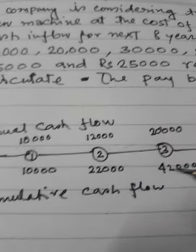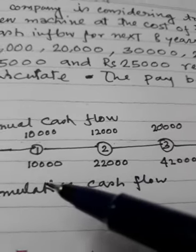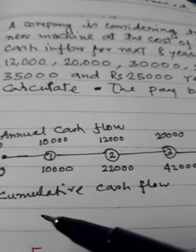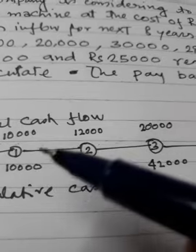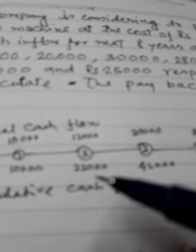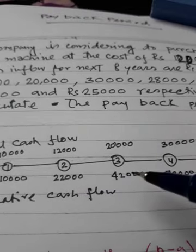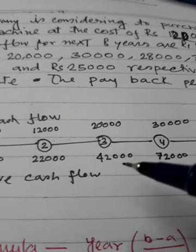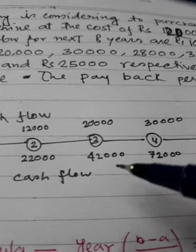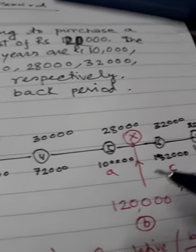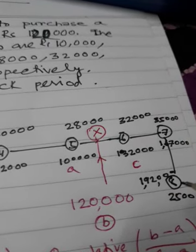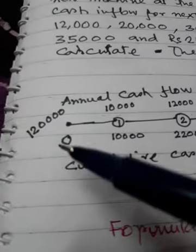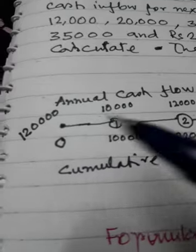If we add these cumulatively, that will be the cumulative cash flow. For the first year it is 10,000; second year 10,000 plus 12,000 equals 22,000; next year 42,000 (22,000 plus 20,000); then 72,000; then 1,00,000; then 1,32,000; 1,47,000; and 1,92,000.